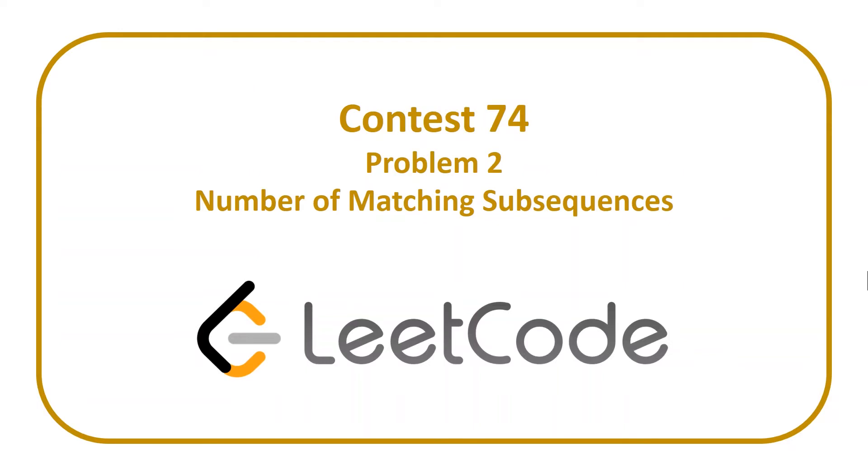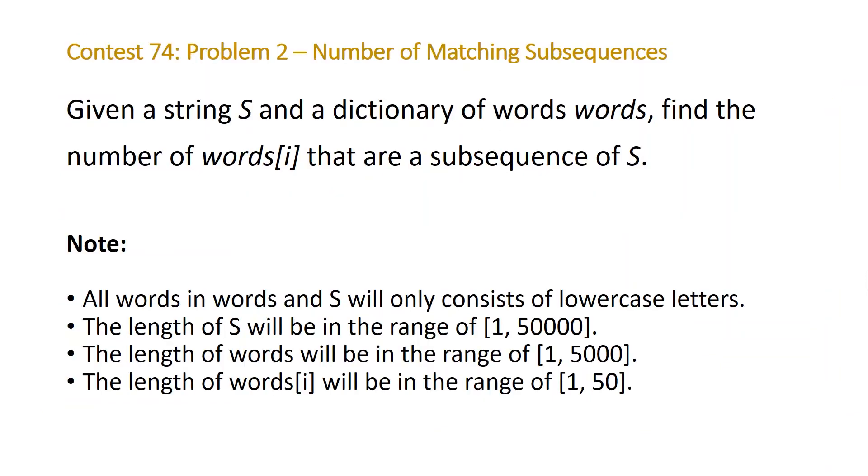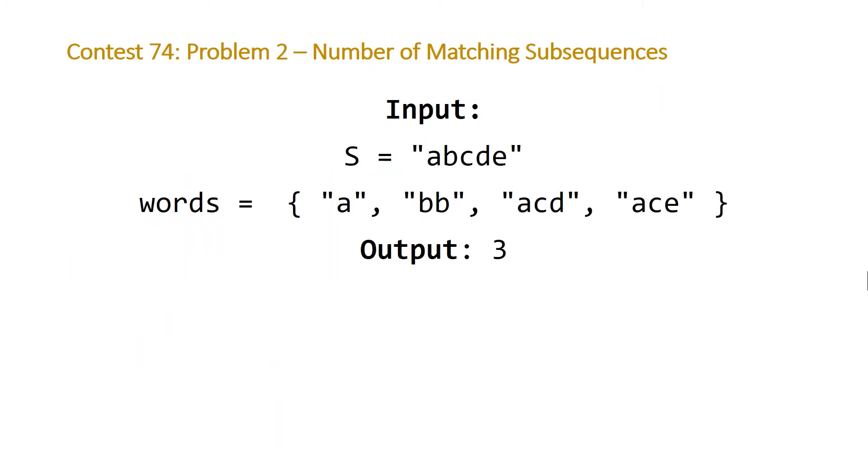The next problem that we'll be covering is problem two from LeetCode Contest 74 entitled Number of Matching Subsequences. The problem states, given a string s and a dictionary of words words, find the number of words that are a subsequence of s. So note that a subsequence and a substring are not the same thing. A substring is a contiguous set of characters, meaning in a row, but a subsequence doesn't necessarily have to be contiguous. It can be, but it doesn't have to be. And note that for this problem, the length of our string s will at most be 50,000. The length of our array of words will be at most 5,000. And each individual word in that array will at most have a length of 50.